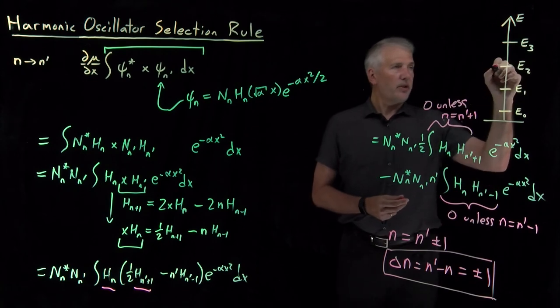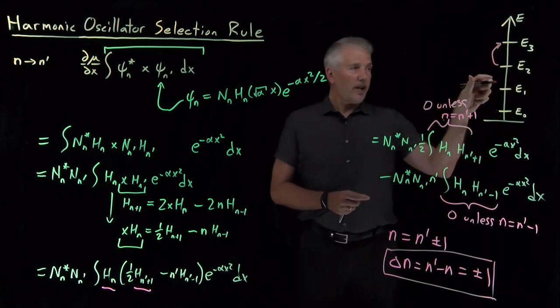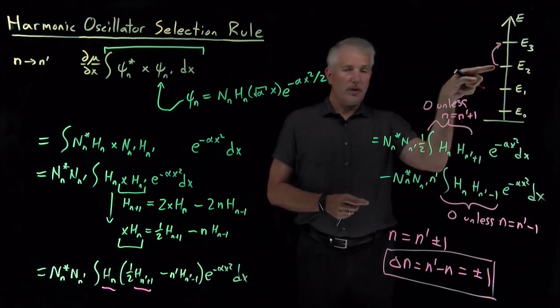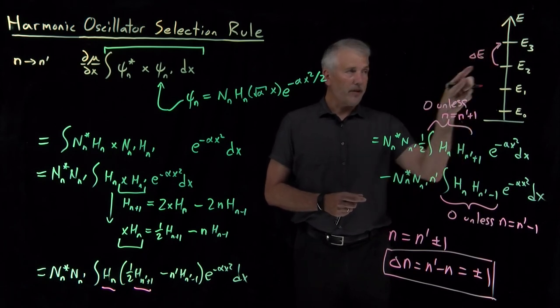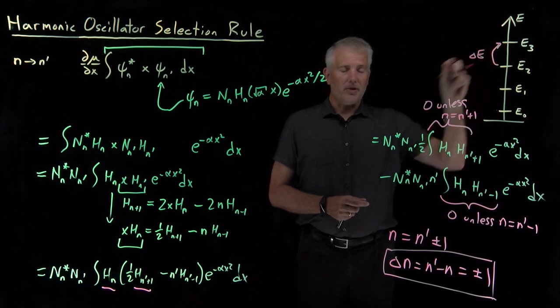I am allowed to make, let's say, this transition, 2 up to 3. I'm allowed to, if I have a harmonic oscillator that's in the n equals 2 energy level, if I provide this much energy to it, if I provide a photon with exactly that much energy, I can induce it to absorb the light and make that transition.